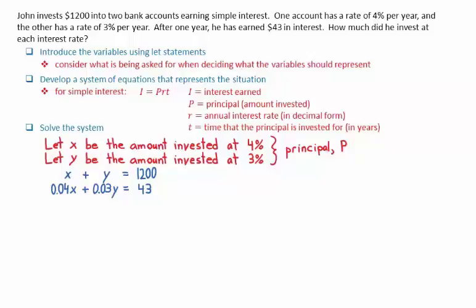We can then solve this system of equations using either elimination or substitution. In this case, I will use the substitution method. Using the first equation, x + y = 1,200.